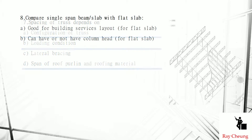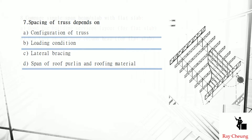For truss spacing, it depends on the loading. The more loading, the spacing should be reduced. If this is a heavy-use building like a plant room with heavy live loads, we need much closer spacing and more steel trusses. Truss spacing also depends on the purlin — the horizontal member supporting the roof and roof material. When the loading is higher, we need to reduce the spacing of the trusses.